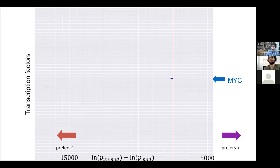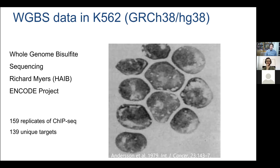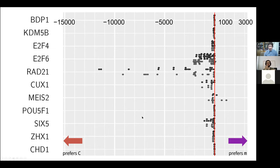Instead of going through 52 transcription factors from mouse data (which is in an older preprint), let's switch to my favorite model organism for gene regulation research: human. As a dry lab person, there's so much data to download from ENCODE, Roadmap, ICGC, and other sources. In K562 we can look at ~140 transcription factors, versus ~50 in mouse ENCODE data.